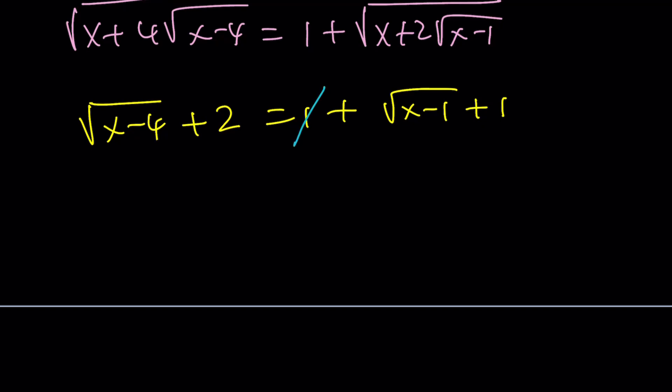So they're going to cancel out. So we end up something like square root of x minus 4—I can't even write it. Square root of x minus 4 equals the square root of x minus 1. What is that supposed to mean? Yes. We can square both sides. At this point, it's good. And we're going to end up with x minus 4 equals x minus 1.